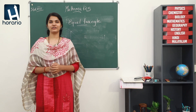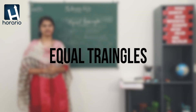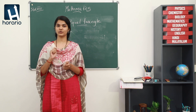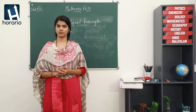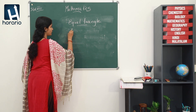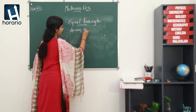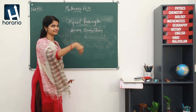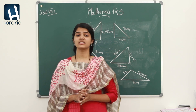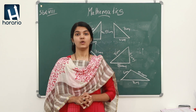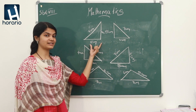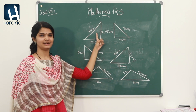Let's move on to our new chapter — equal triangles. What do we mean by equal triangles? To know this, we have to do an activity. Take out a notebook and draw a triangle with sides 4 centimetres, 5 centimetres, and 7 centimetres. We get different triangles like this. When we take 4 centimetres as base, we will get two triangles like this.